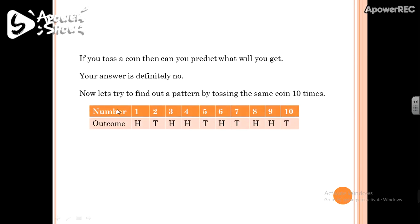After tossing the coin 10 times, I get the following results. This table shows the outcomes after tossing the coin. After the first toss, I get a head. After the second toss, I get a tail. After the third toss, I get a head, and so on. Just look at this table and tell me: is there any predictable pattern? Definitely you cannot find any pattern here.